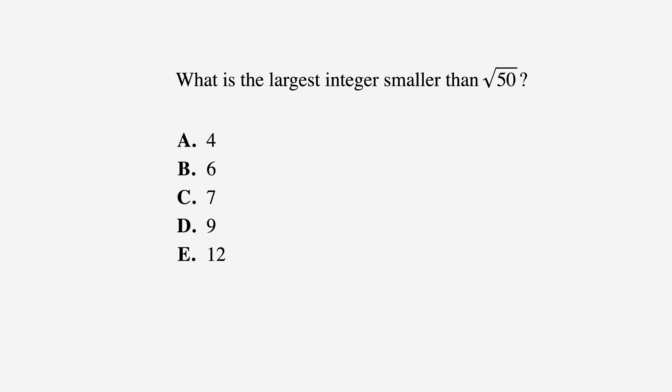Let's read this problem for practice. What is the largest integer smaller than the square root of 50? For the answer choices, we have A: 4, B: 6, C: 7, D: 9, and E: 12.